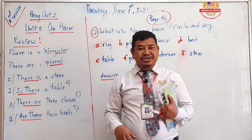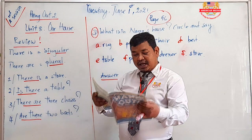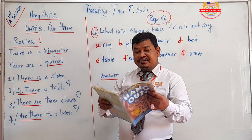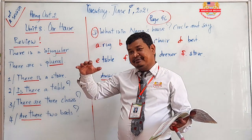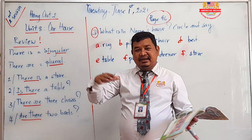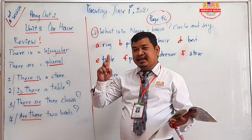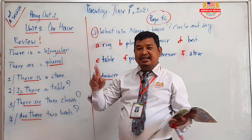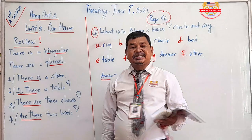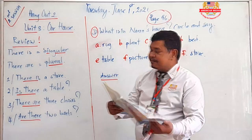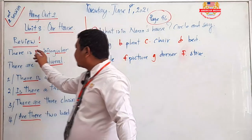This review is related to the words 'there is' and 'there are,' because in our text about Narom's house, they talk about 'there is' and 'there are' — for example, there is one chair or one stove. Make sure you already know these, but let me review them.